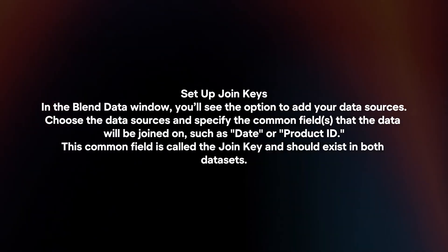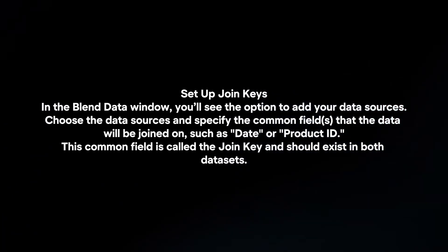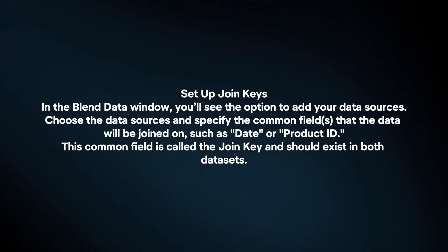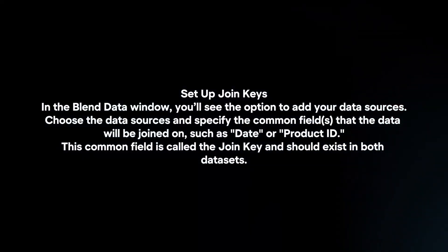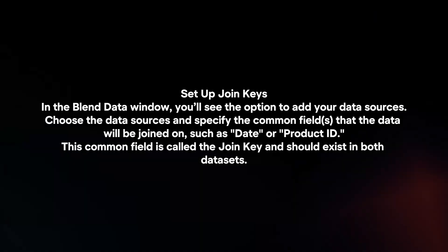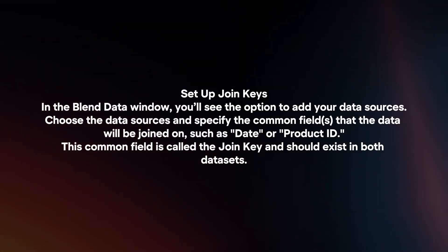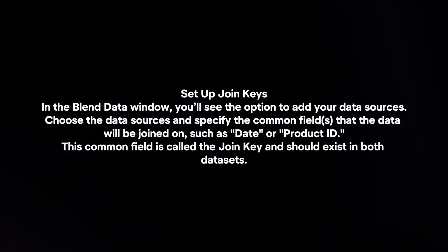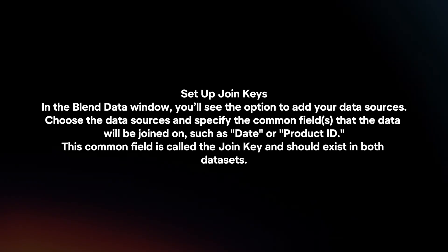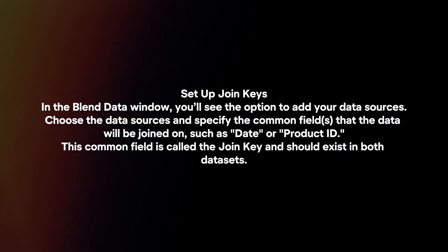In the Blend Data window, you will see the option to add your data sources. Choose the data sources and specify the common field that the data will be joined on, such as date or product ID. This common field is called the join key and should exist in both data sets.